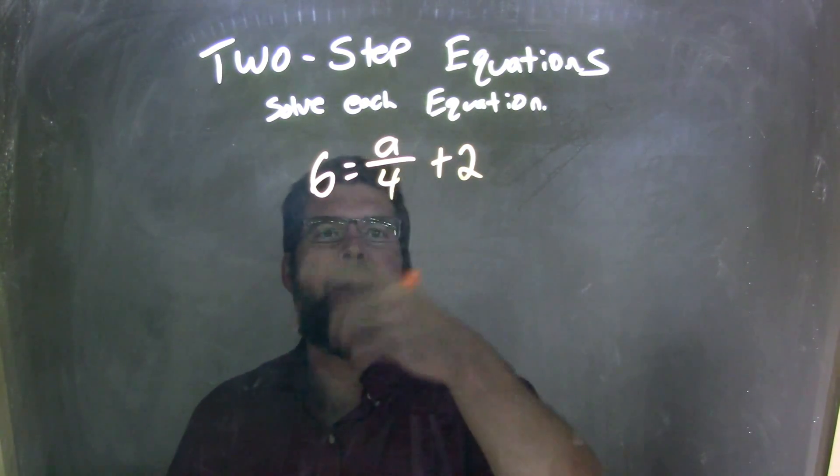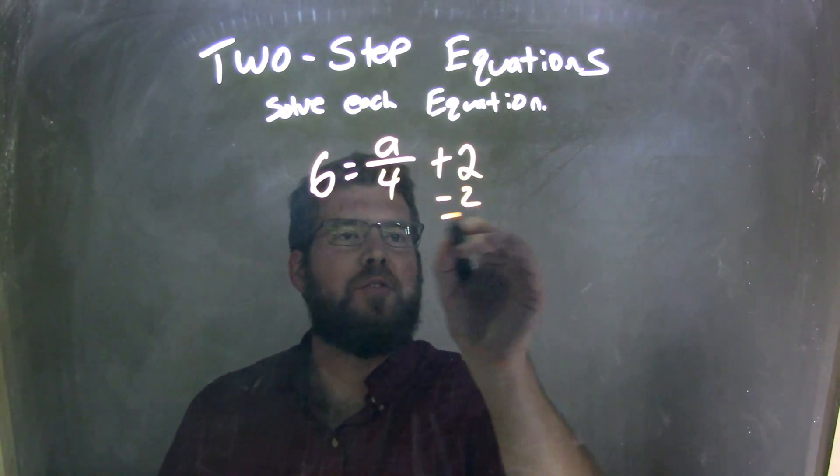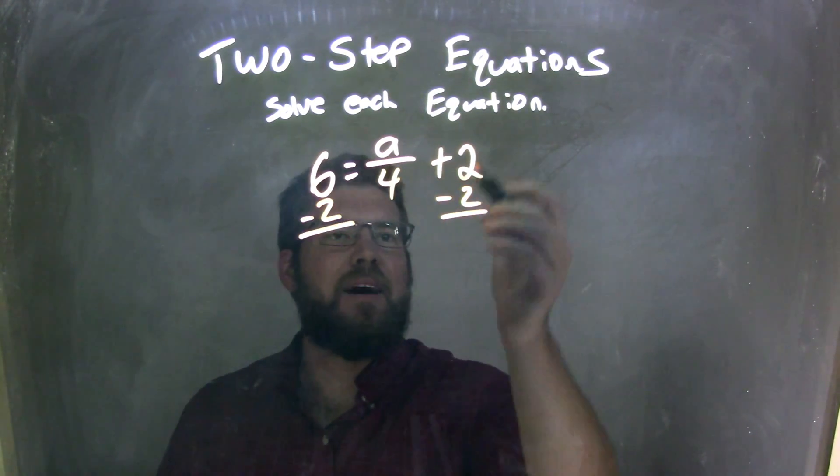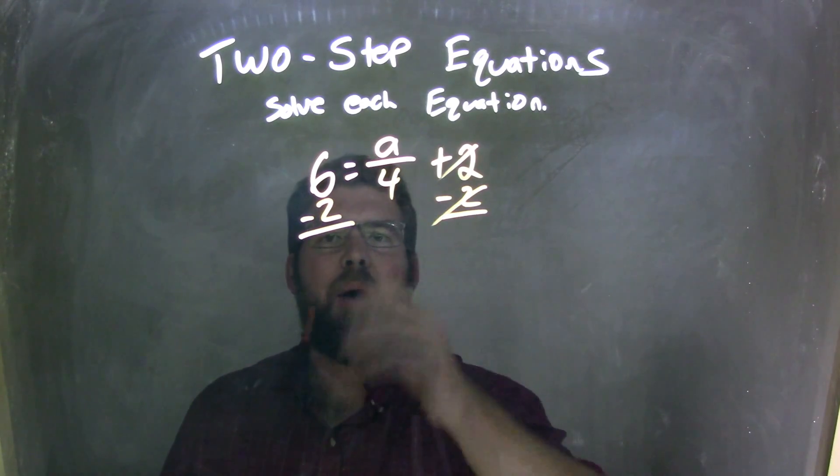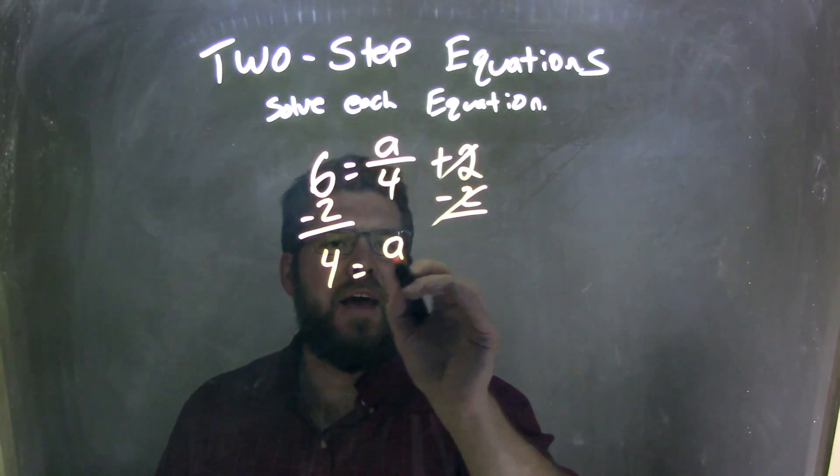Well, my first step to get A by itself is I want to subtract the 2. We see a plus 2, I want to subtract the 2 to both sides. What that does is cancel out the 2s here, and we're left with 6 minus 2, which is 4. So we have 4 equals A over 4.